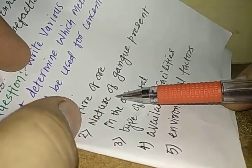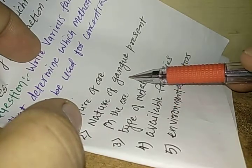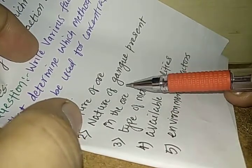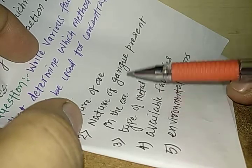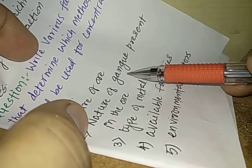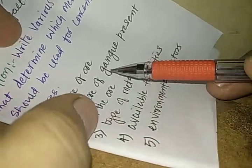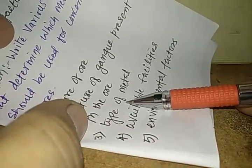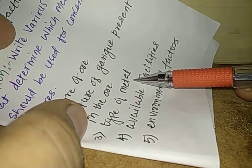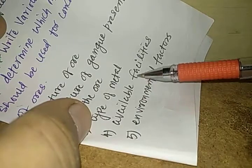The next factor is the nature of the gangue present in the ore — whether the gangue is more dense or less dense, and whether it is attracted by a magnet or not. These are the ways we can differentiate the gangue and the ore. Then there is the type of metal — what type of metal it is.